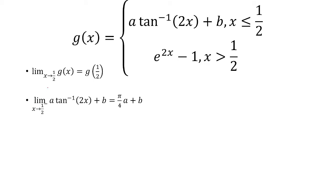So when I'm looking at the left-hand limit, I'm looking at values to the left of, or less than, one half. So that's going to be the function at the top here. If I plug in x equals one half, I'm left with pi over 4a plus b.